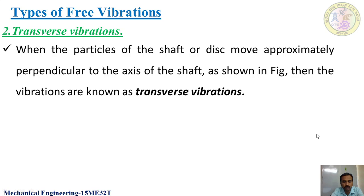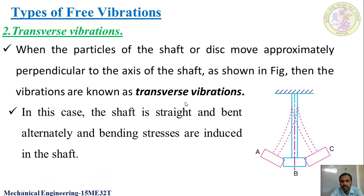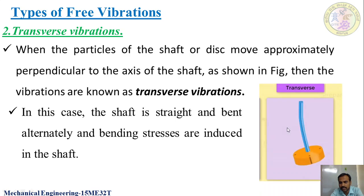The next is transverse vibration. Here, the particles of a shaft or disc move approximately perpendicular to the axis of the shaft. This is the axis of the shaft. So these particles of the disc move approximately perpendicular to this axis of the shaft, and then the vibrations are said to be transverse vibrations. In this case, the shaft is straight and bent alternatively, inducing bending stresses in the shaft; bending stresses will be induced in the shaft alternatively.